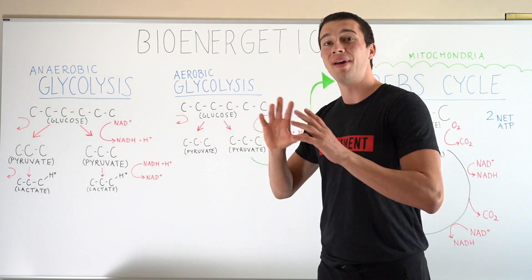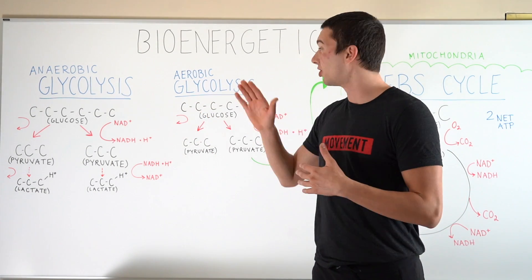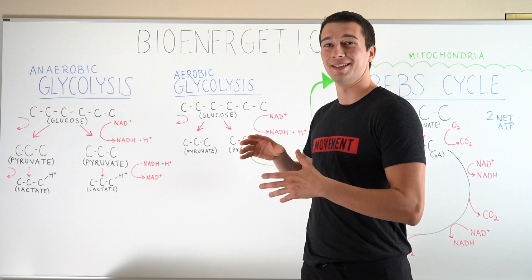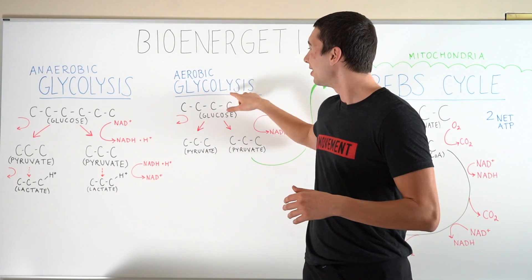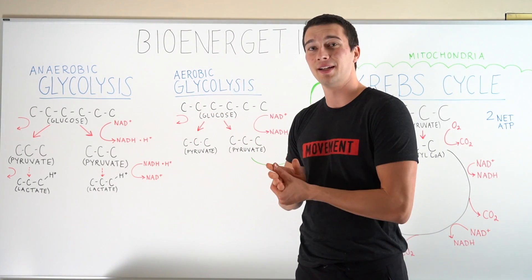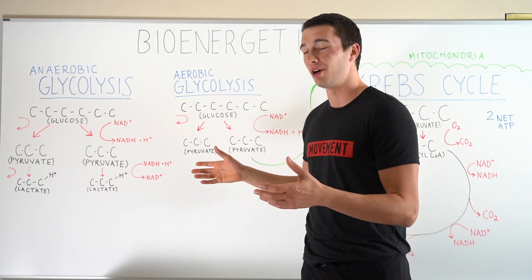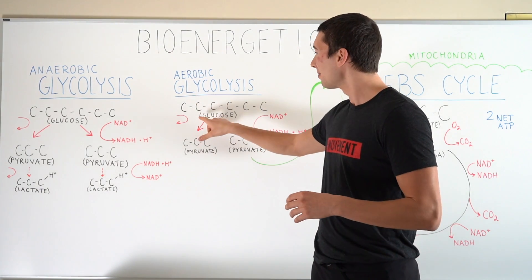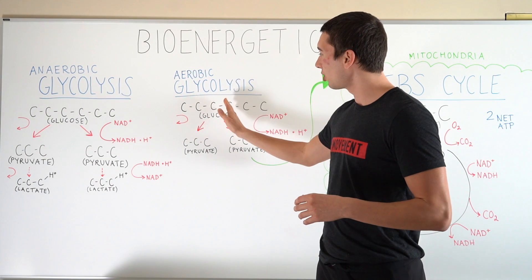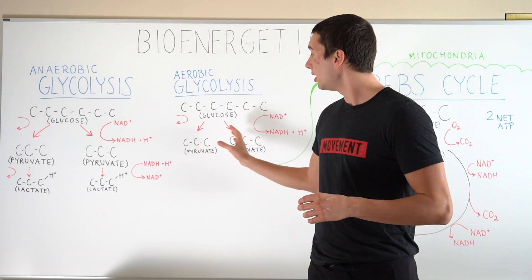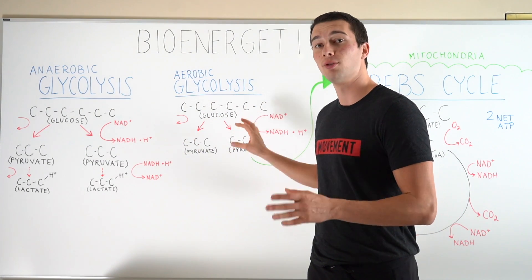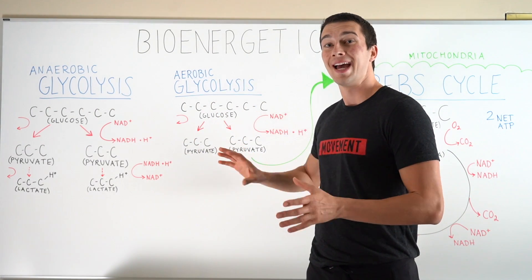The basic process of glycolysis tells you what it is — it's glycolysis, splitting a glucose molecule. So that six carbon molecule is being split in half into two three-carbon pyruvate molecules.